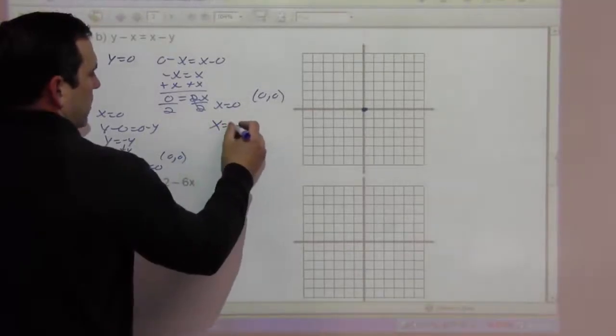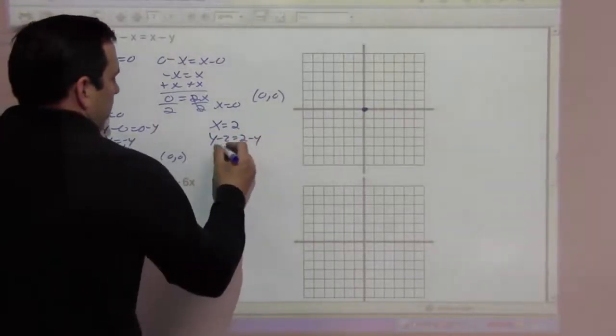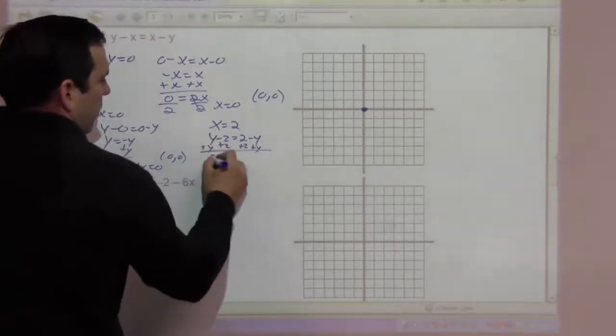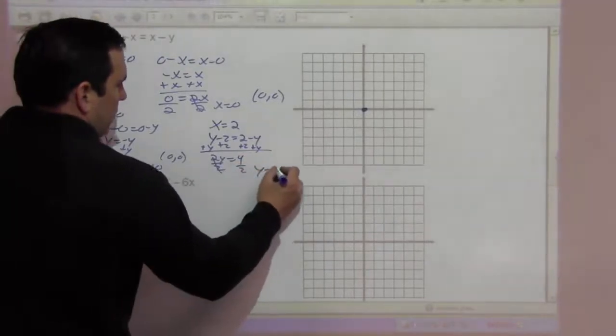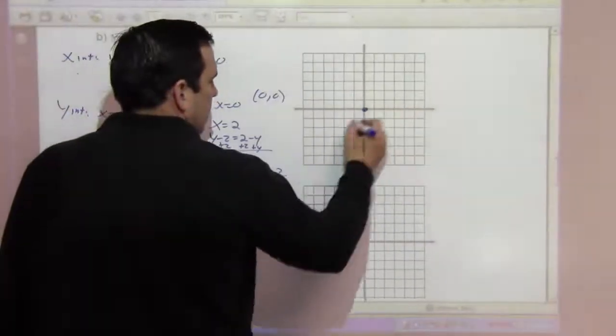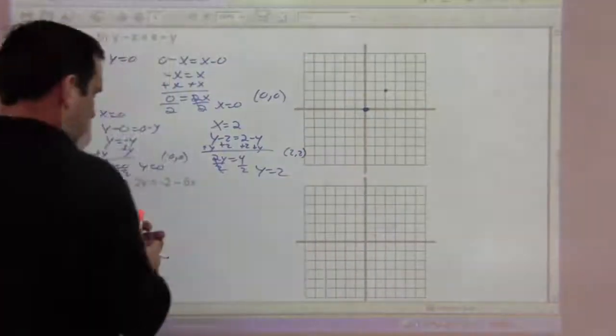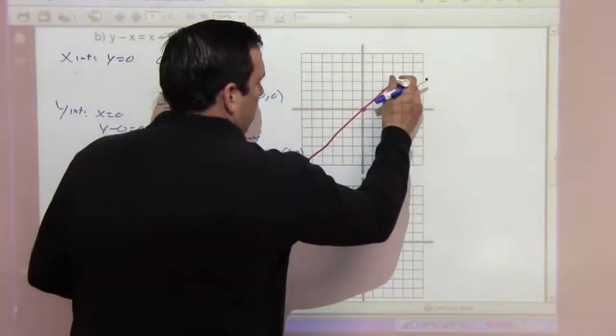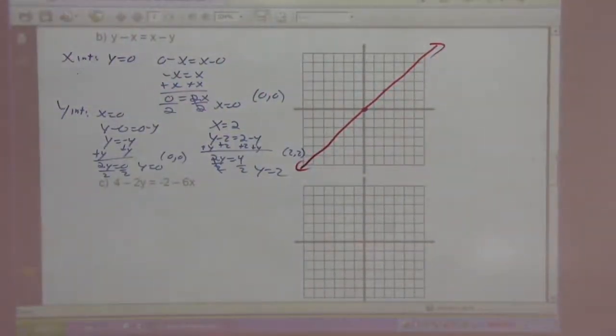How about x equals 2. Y minus 2 equals 2 minus y. If I add 2 to both sides and add y to both sides, 2y equals 4, or y equals 2. So with x being 2, we have y being 2.